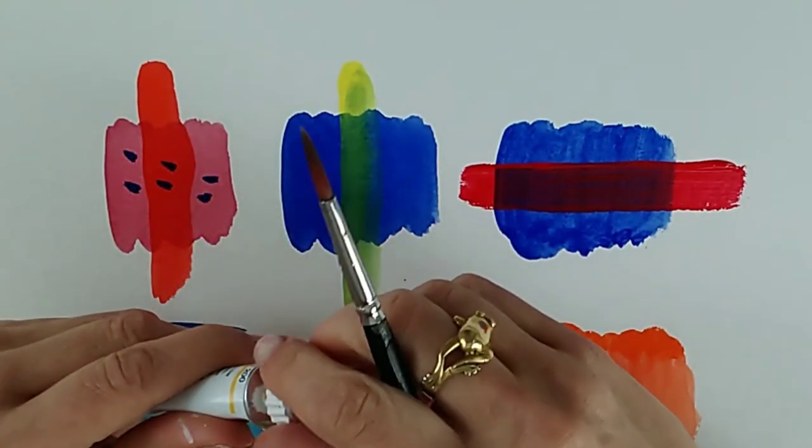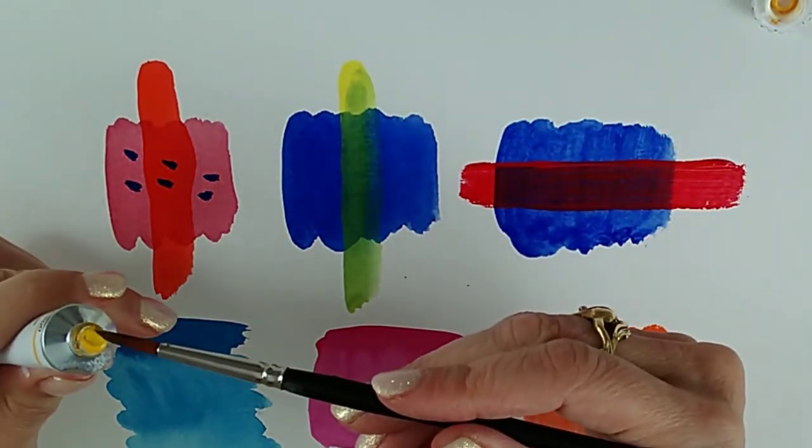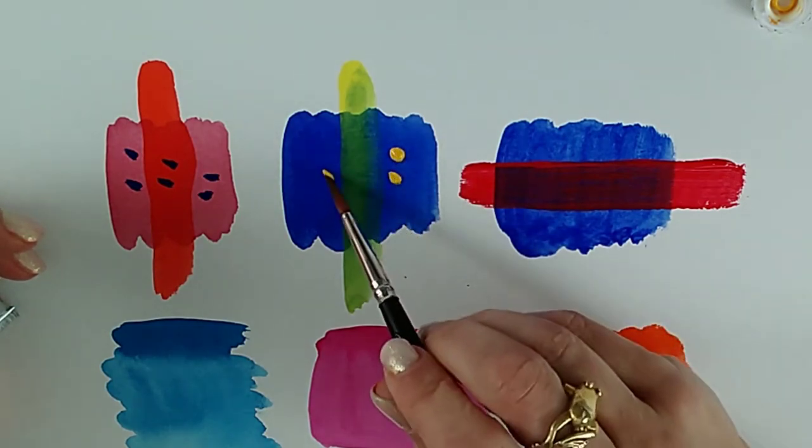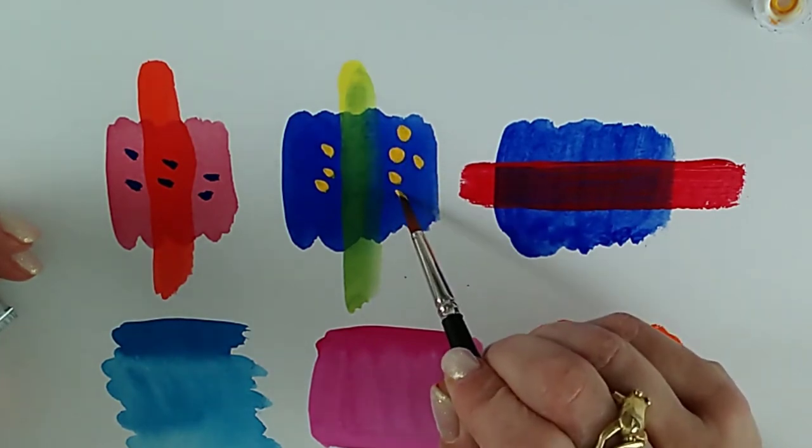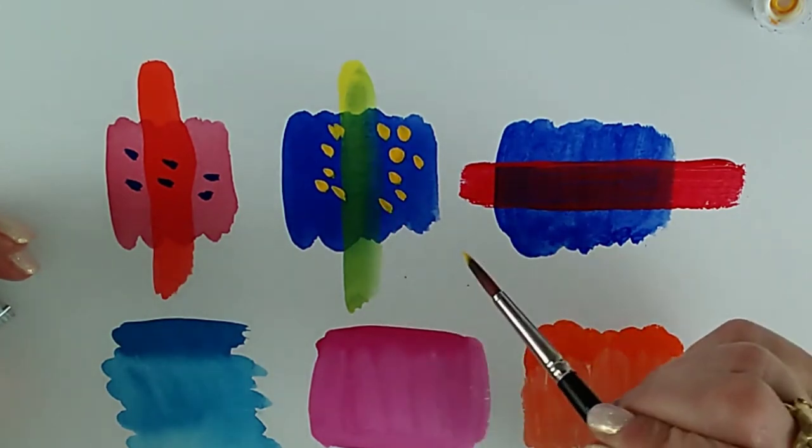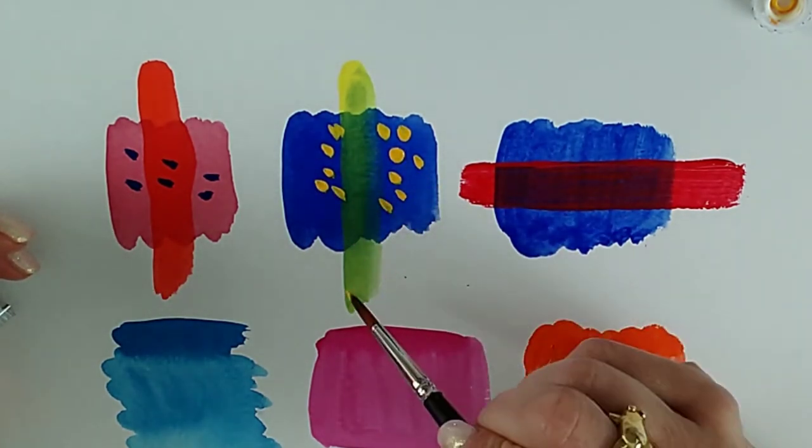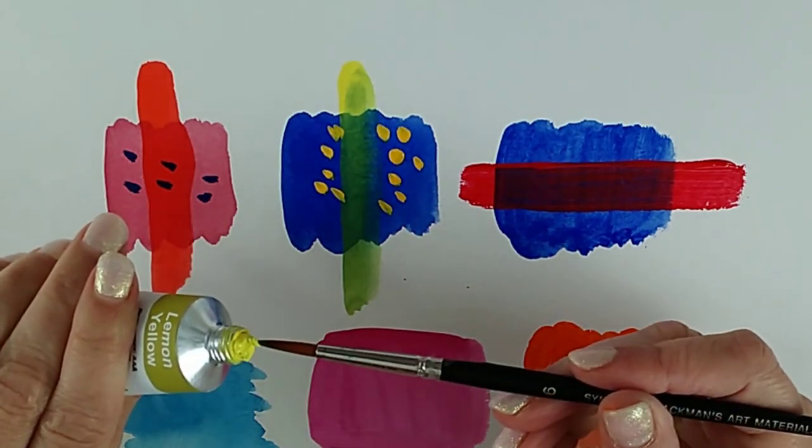Now gouache is a little different in that you can paint light on top of dark to an extent. So we can get a lighter color like this. Depending how thickly we layer it, we can paint light on top of dark, but we have seen that difficulty that we sometimes have with underneath colors lifting a little bit. So that's just something to consider. But you can work either light to dark or dark to light with gouache. And the same is true of acrylics.